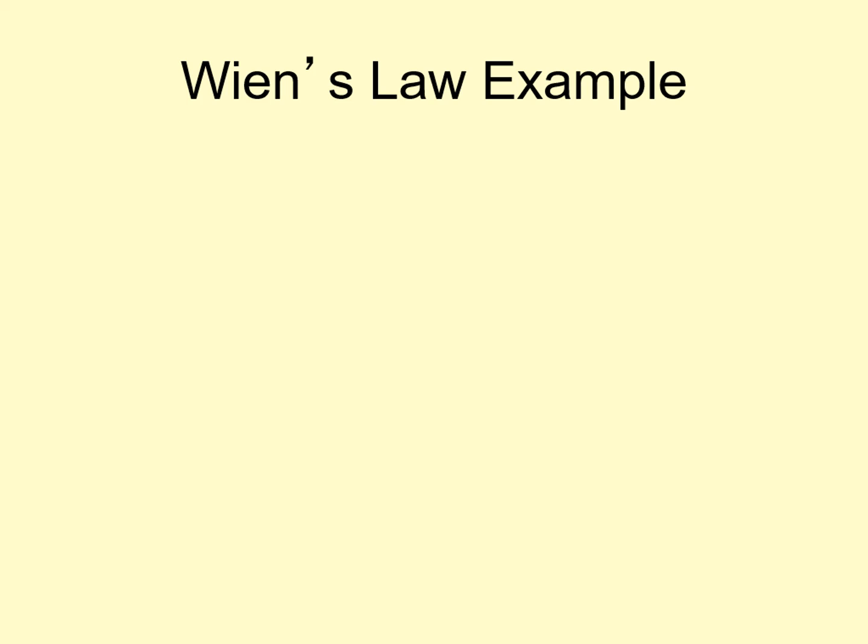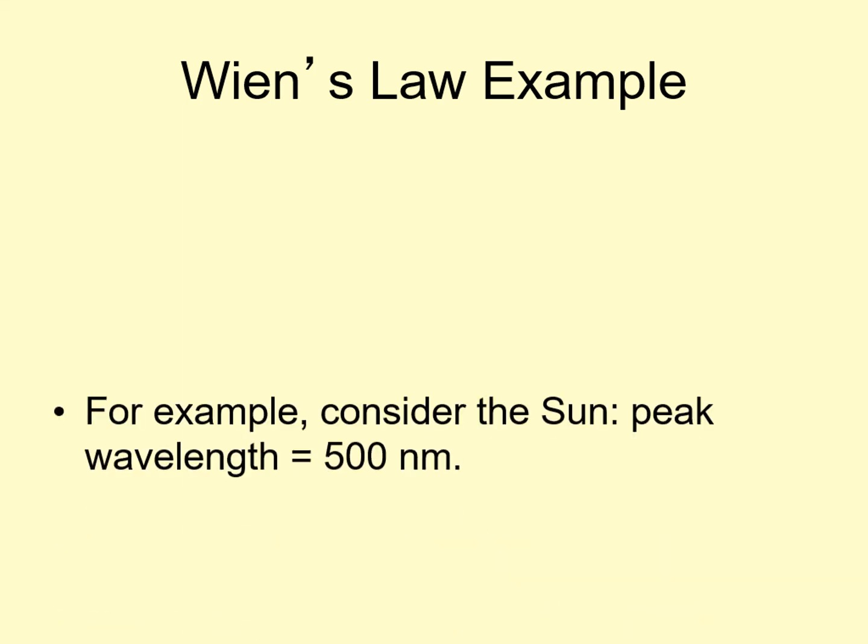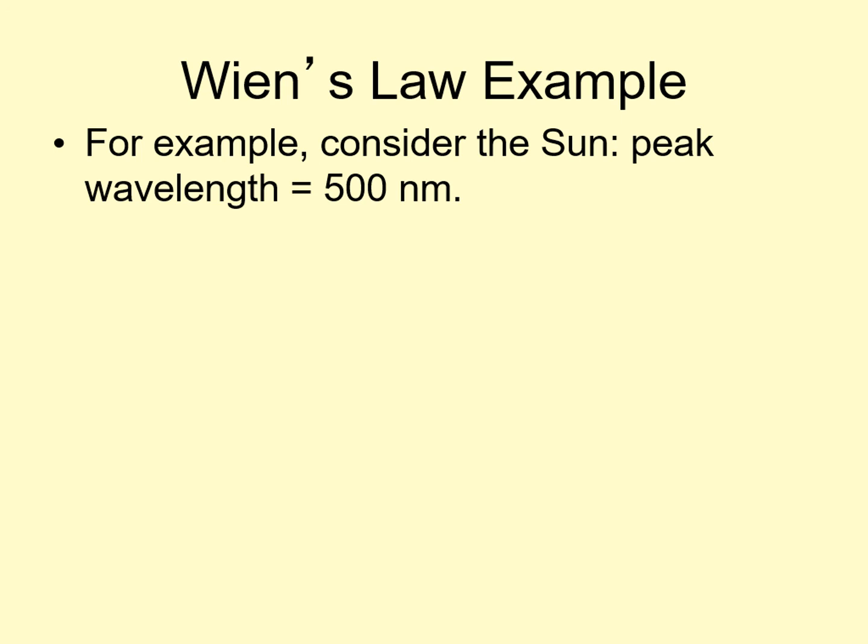Now let's look at an example of how to use Wien's law. We'll consider the sun. Like most stars, the sun emits thermal radiation. Its peak wavelength, where it puts out the most light, is at 500 nanometers, right in the middle of the visible spectrum.